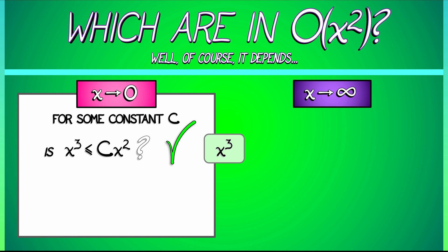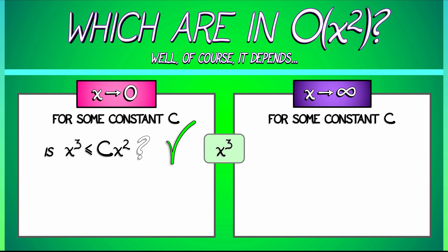But as x goes to infinity, is there some constant c so that x cubed is bounded above by that constant times x squared? No. Not happening. If x is some really large number, then x times x times x is definitely going to dominate x squared times a constant. No matter what constant c you pick, it could be really huge. But eventually, x is going to get large enough to dominate it.